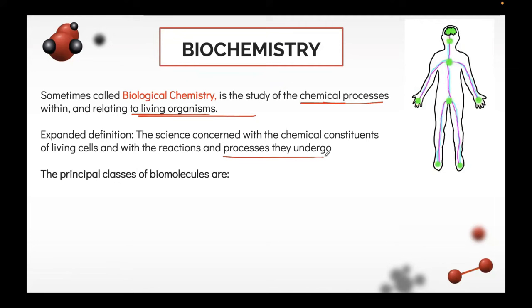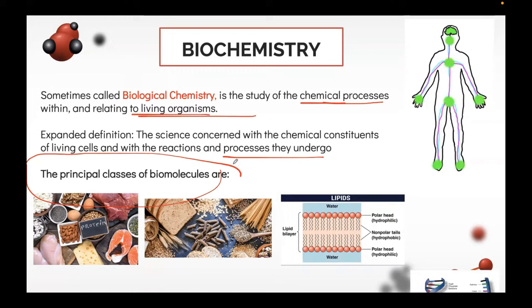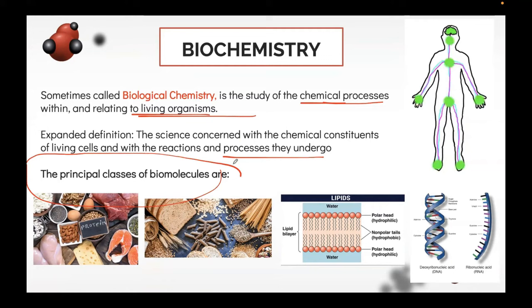The chemical processes happening inside our body include metabolism, reabsorption, the breakdown of sugar, and the breakdown of proteins. The principal classes of biomolecules in biochemistry include proteins, carbohydrates, lipids, and nucleic acids. It is very important to keep these in mind because these four biomolecules are what we will be discussing throughout the entire duration of our biochemistry subject.